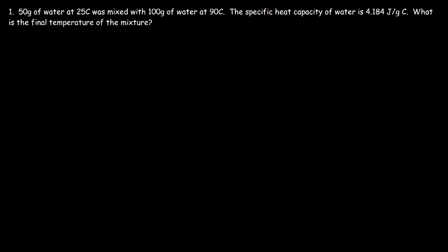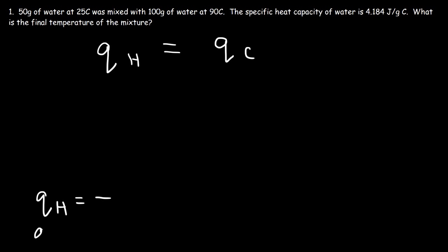Heat energy is going to flow from the hot water sample to the cold water sample. So the amount of heat energy released from the hot water sample will be equal to the heat energy absorbed by the cold water sample, assuming there are no heat losses. The hot water releases heat energy, so it's exothermic. And the cold water absorbs heat energy, so it's endothermic.